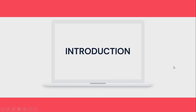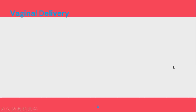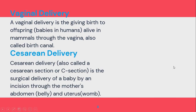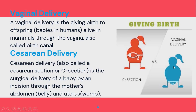Firstly, the introduction. What are the different modes of delivery or childbirth? These are vaginal delivery and caesarean delivery. Vaginal delivery is the process of giving birth through the vagina or the birth canal, while caesarean section, or C-section, is the surgical process of giving birth which involves incisions through the mother's abdomen and uterus.